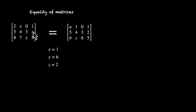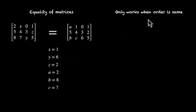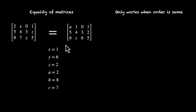And this works the other way around. What are the values of a, b, and c? So a is equal to 2, b is equal to 8, and c is equal to 7. That's how we can use equality of matrices to find the missing elements. One quick note: this only works when the order is the same. Here the order was 3 by 4 — 3 rows and 4 columns — and here the order was also 3 by 4. So you can only compare matrices, you can only say that they're equal or not equal, if their order is the same.